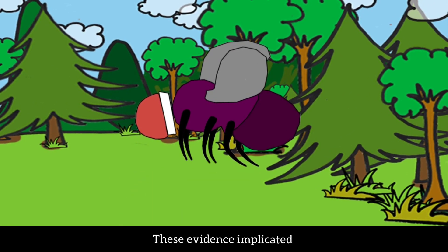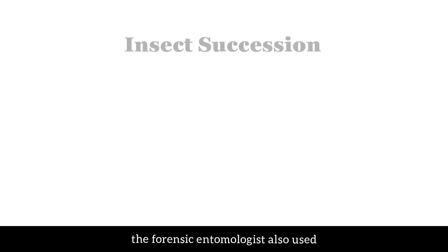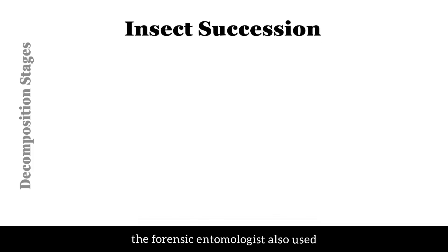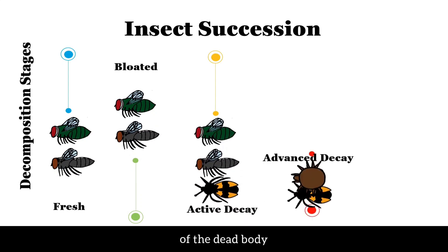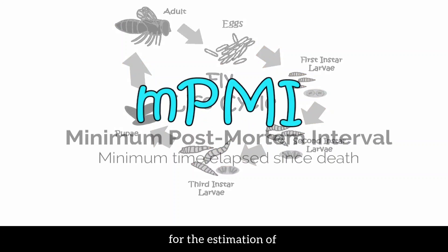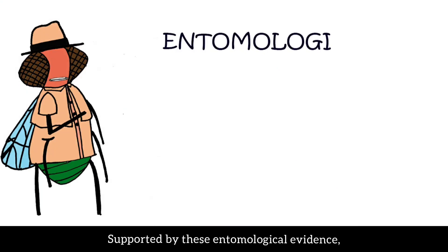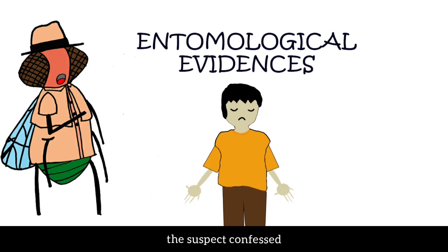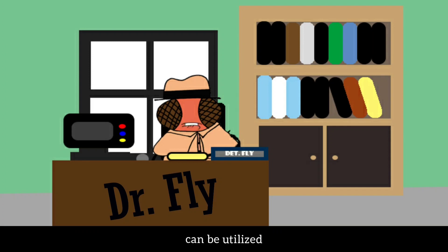Meanwhile, the other fly found in the backpack belonged to a jungle species, indicating that the suspect had visited the jungle recently. This evidence implicated the husband in the death of his wife. The forensic entomologist also used succession data, along with decomposition stages of the dead body and fly developmental data, for the estimation of the minimum post-mortem interval, or time of fly colonization. Supported by this entomological evidence, the suspect confessed and was convicted.